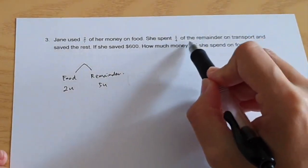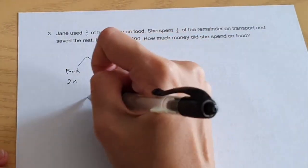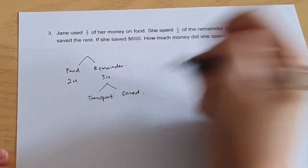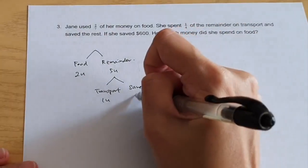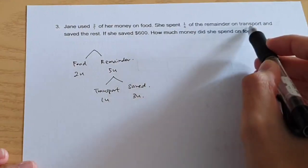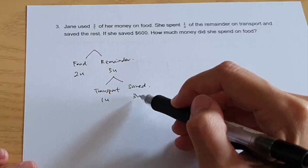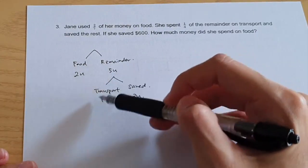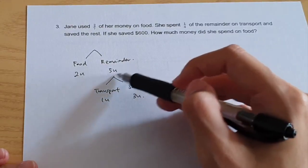Of the remainder, she spent one quarter on transport. So I want to split the remainder open. This is on transport. And the rest is saved. So one unit on transport and three units saved. Because one quarter of the remainder is on transport. So three quarter of the remainder will be saved. If you look at this, five units for the remainder is split open into transport and savings. But this is total five units. And this is only a total of four units.